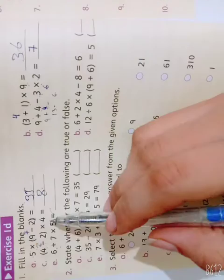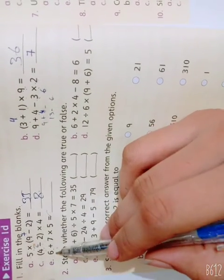7 times 5 is 35. When we add 6, we get 41.